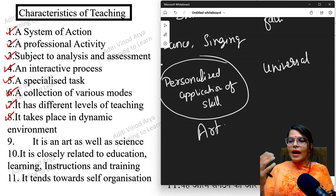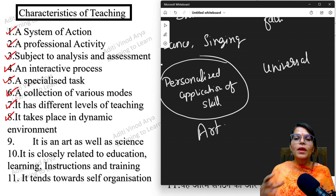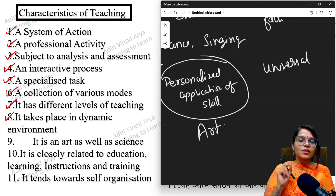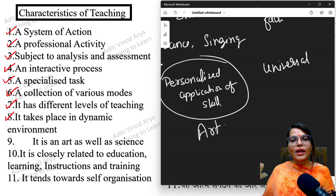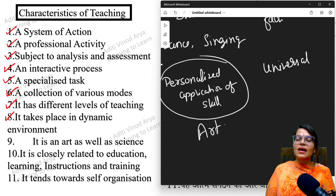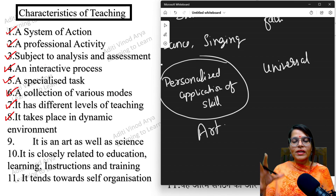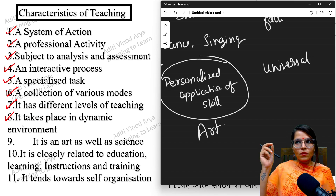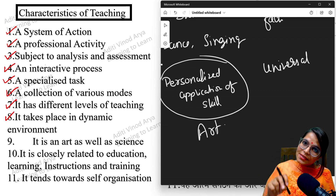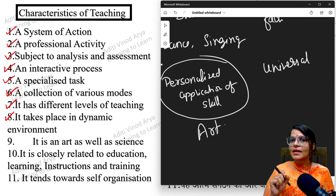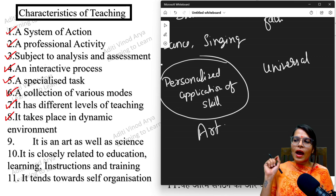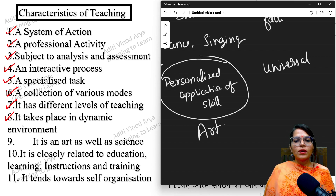Teaching is an art because every teacher teaches in his or her own way — I use examples and a smart board, whereas other teachers might use a blackboard or whiteboard. It is also a science because the content being taught is the same across educators, but there is uniqueness in delivery. Teaching is a beautiful blend of science and art, and you must understand why it is both, as confusing questions are asked about this.